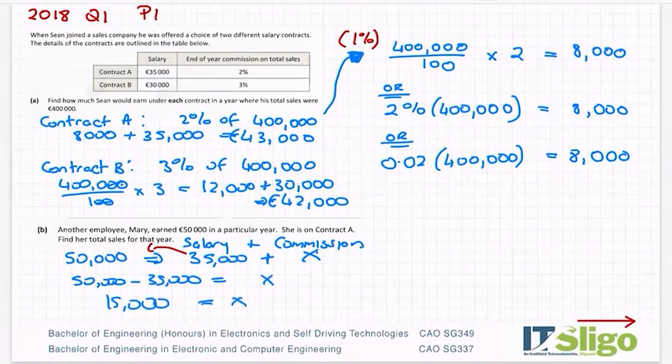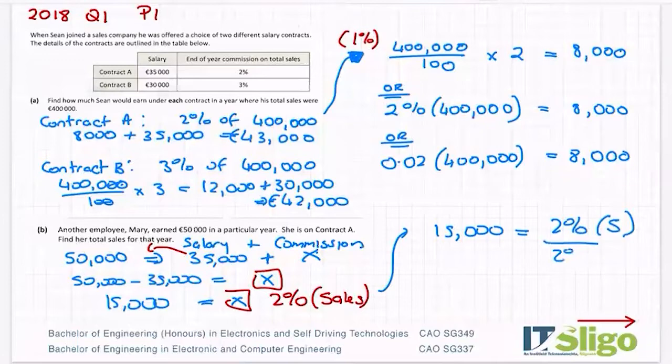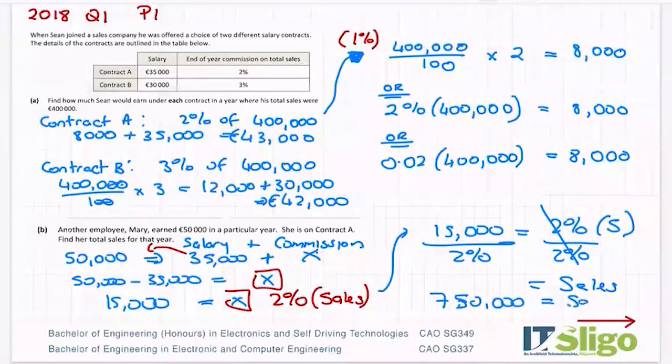However, the x is a little bit misleading in that that commission is 2% of sales. That 15,000 then is equal to 2% of what we call sales. Divide both sides by 2% because 2% is just a number and I will get my sales. So on my calculator, 15,000 over 2% and I am getting 750,000 for the sales that Mary made in that particular year.